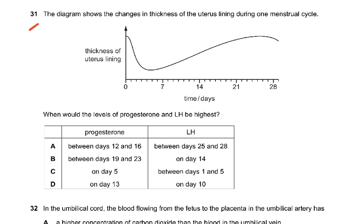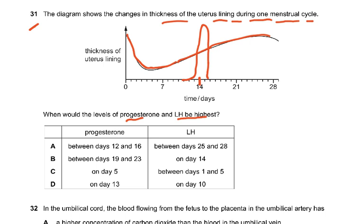Question 31. The diagram shows the changes in thickness of the uterus lining during one menstrual cycle. The lining decreases during menstruation, then slowly repairs and remains thick for some time. Day 14 is the time of ovulation. When would the levels of progesterone and LH be the highest? LH is highest on day 14, so that's the answer. The answer is B, and progesterone would be highest between days 19 and 23.